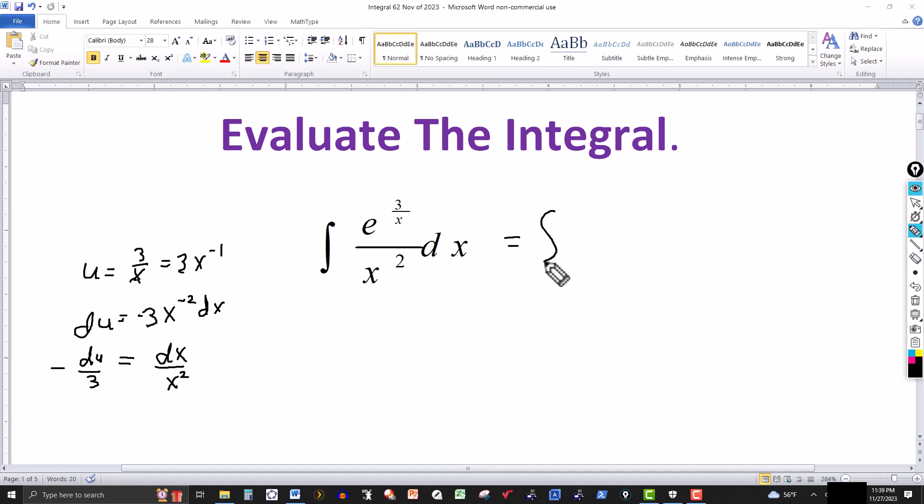So this will be the integral of e, and then the exponent is 3 over x, but that's what my u is. So this is just going to be e to the u, and again like I said, the dx over x squared, dx over x squared can be replaced by minus du over 3.